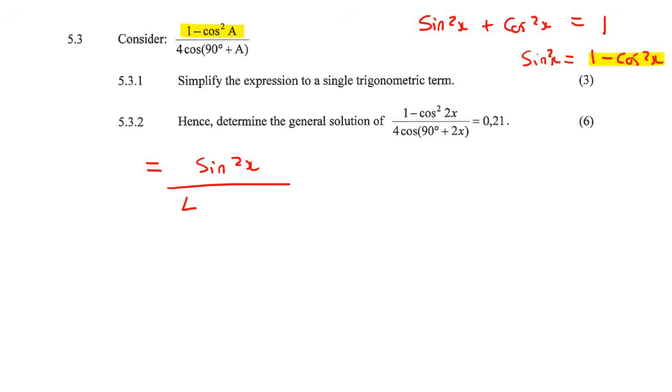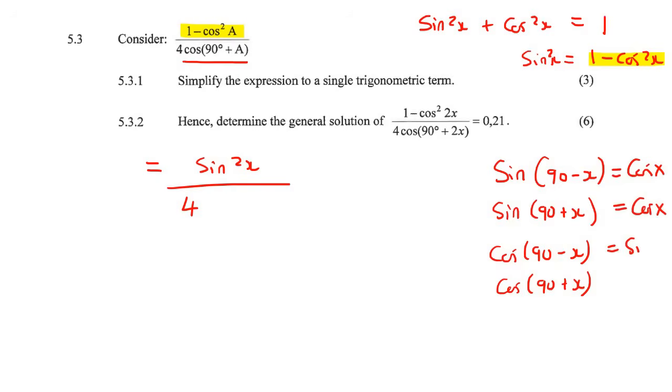Then at the bottom, we have a co-function. Now remember, there are four co-functions that we need to know. So they all become the opposite. So this one just becomes cos x, this one becomes cos x as well, this one becomes sin x, and then this one's the weird one, this one becomes negative sin x. This cos 90 plus, that one becomes negative, and that's actually the one that they gave us here, the sneaky people.